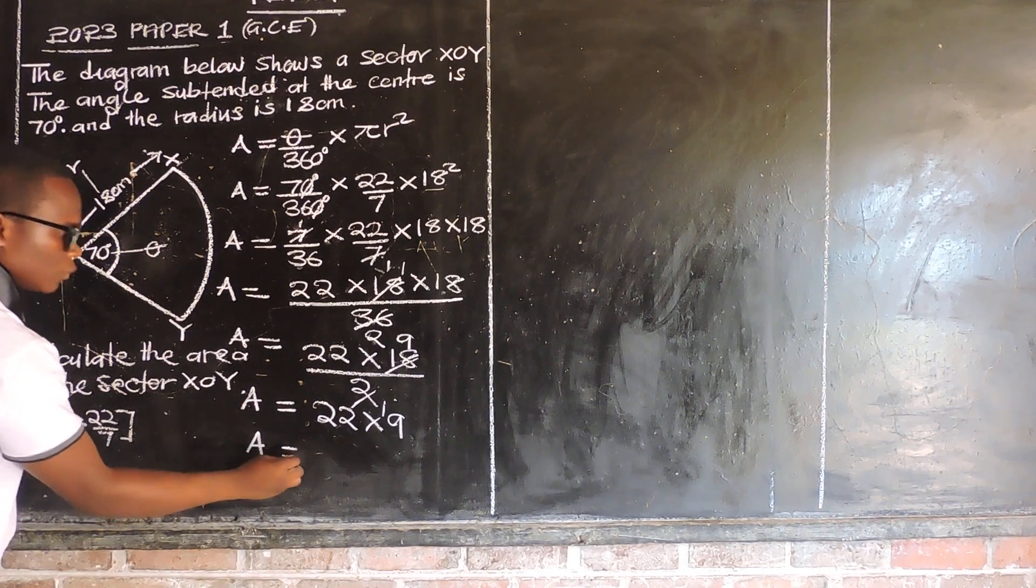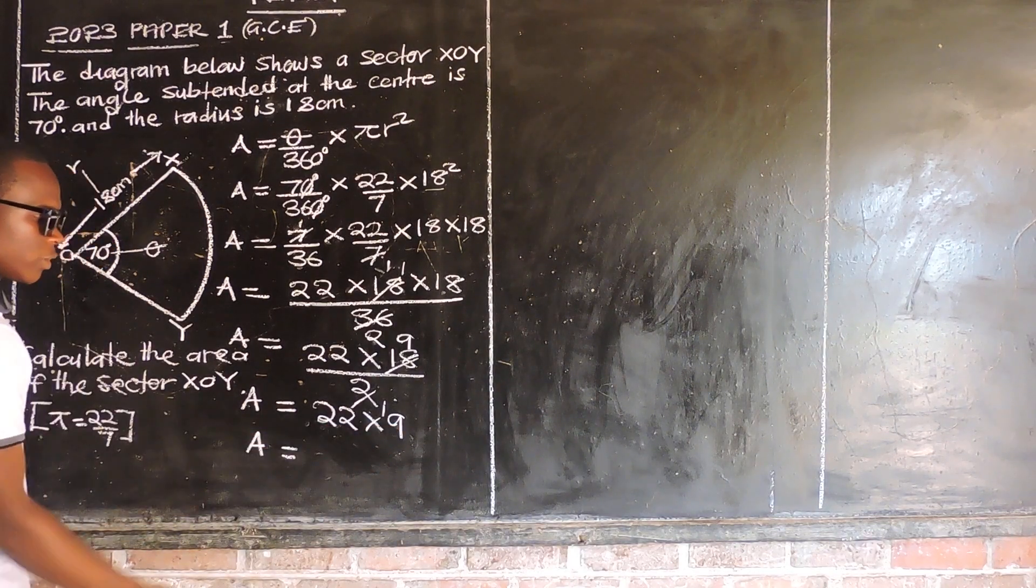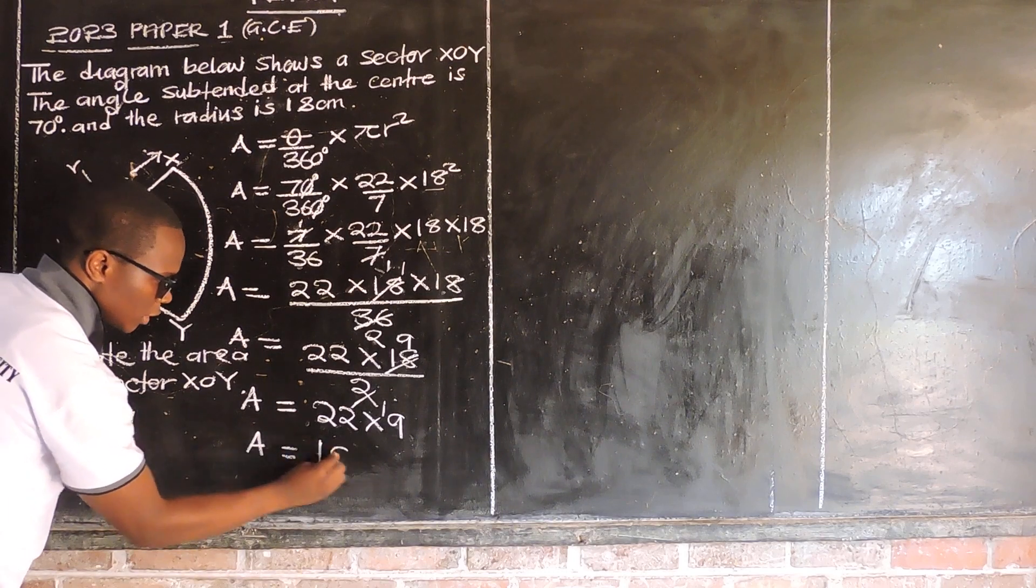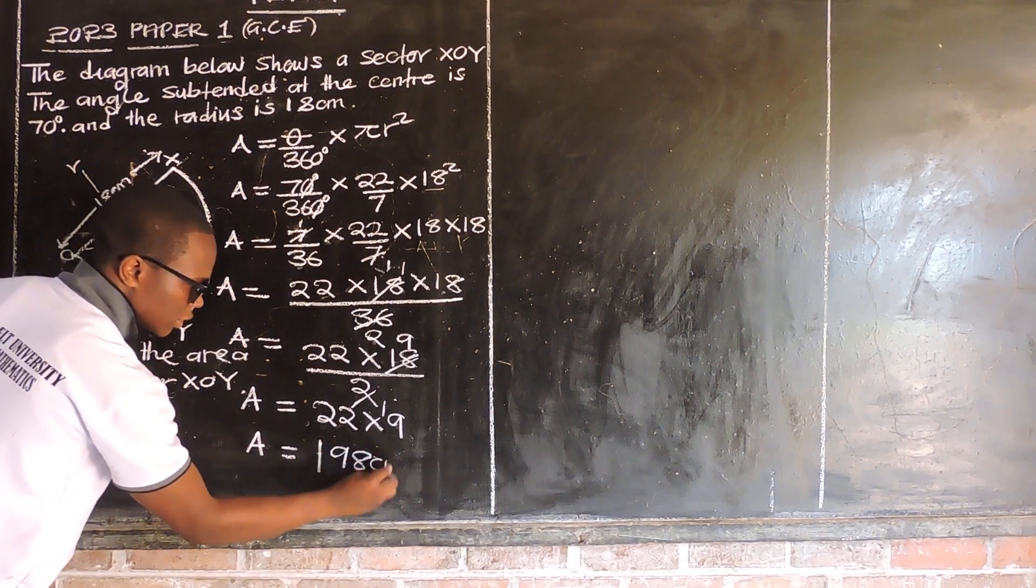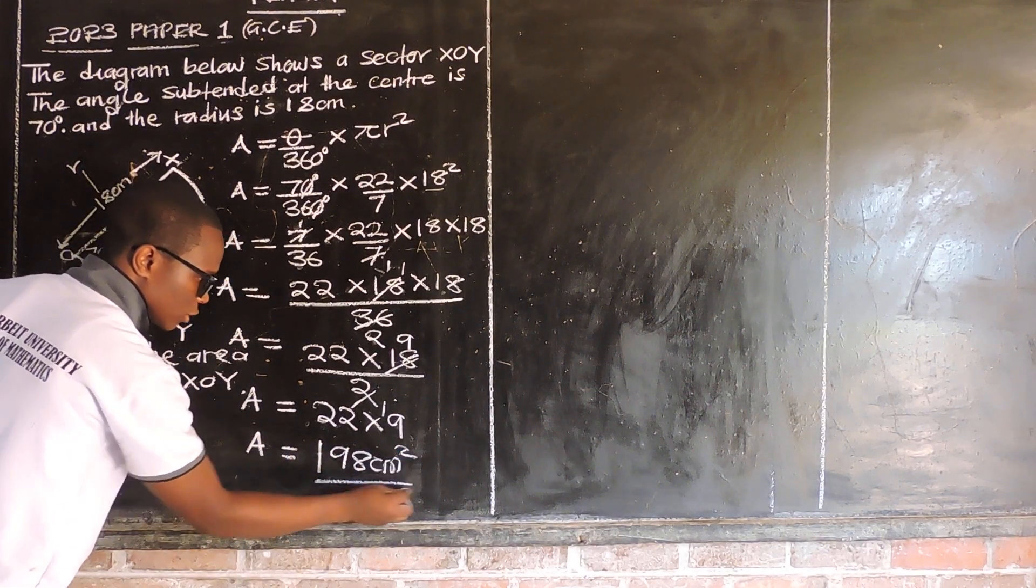So area is equal to 22 multiplied by 9, you get 198 cm². So this is our area.